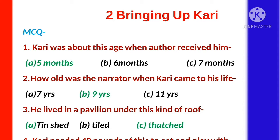First one: Kari was about this age when the author received him. Answer is A — five months. Second: how old was the narrator when Kari came into his life? Option is B — nine years.